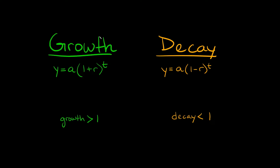So what is the difference between exponential growth and exponential decay? They have very similar equations. For growth: y = a times (1 + r) raised to the t. For decay, the only difference is a minus sign: y = a times (1 - r) raised to the t. Here, y is your final amount, a is your initial amount, r is your rate — also called the growth rate, rate of growth, or rate of change — and t stands for time.